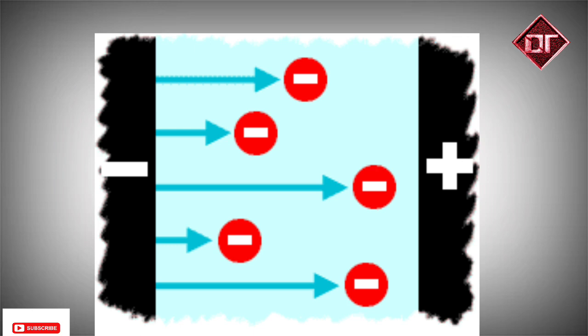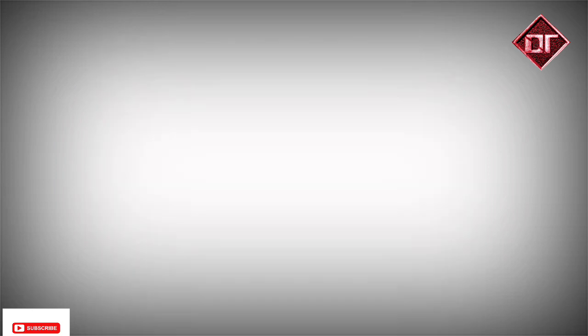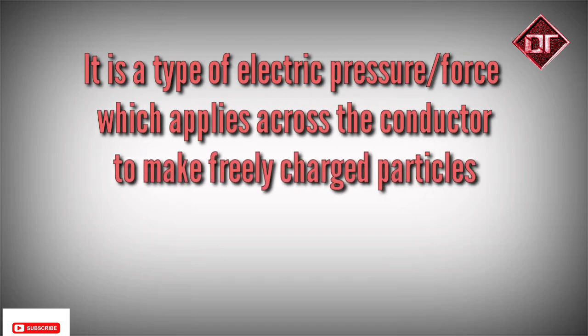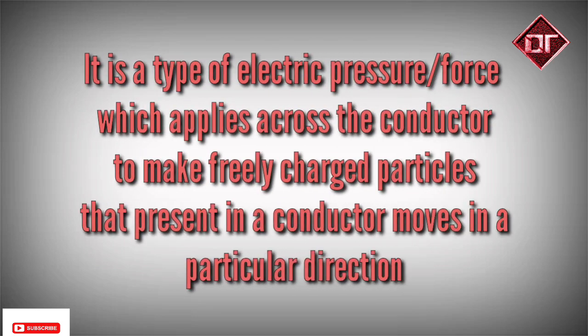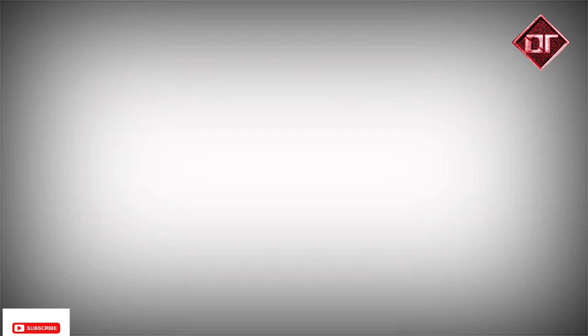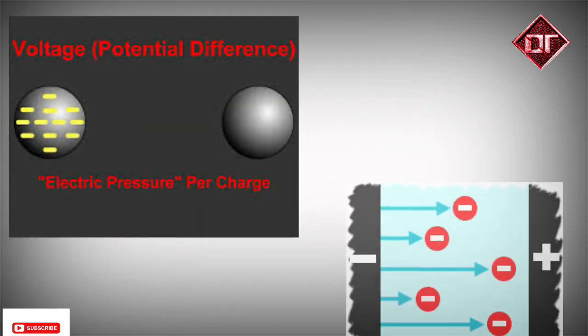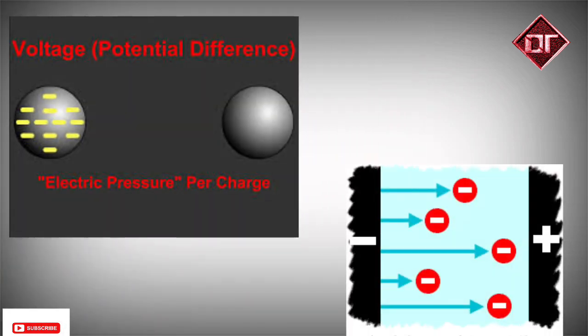Now let's look at electric potential. Let's look at the definition and then understand it. Electric potential is a type of electric pressure which is applied across a conductor to make the freely charged particles present in that conductor move in a particular direction.